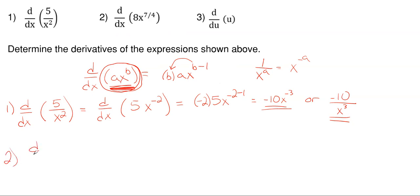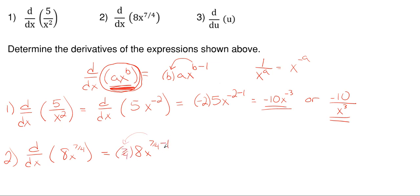So moving on with number two, we're taking the derivative with respect to x again. This time we have 8 times x to the power of seven fourths. We don't have to rearrange this one at all because it's already in the form of ax to the power of b, where eight is a, x is the variable, and b is seven fourths. So taking the derivative: we keep the constant eight, drop the seven fourths in front and multiply, then subtract one from seven fourths. Seven fourths times eight gives us 14, and seven fourths minus one — which is seven fourths minus four fourths — gives us three fourths. So the answer is 14x to the three fourths.